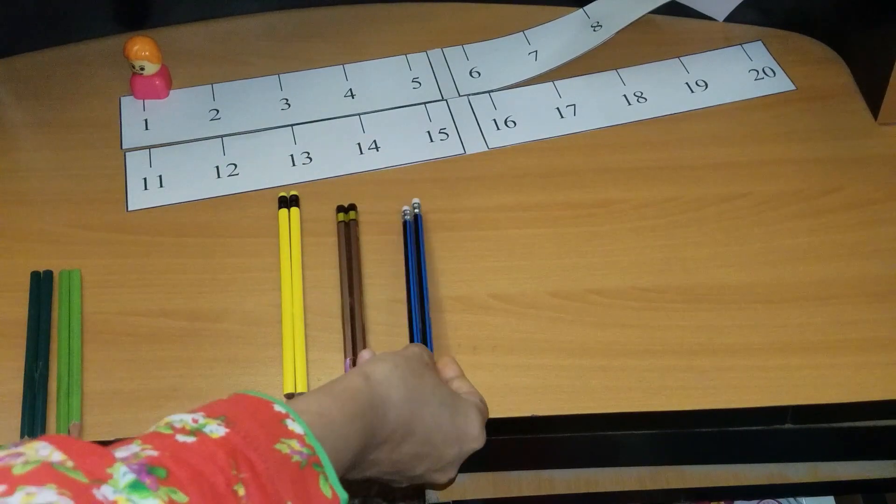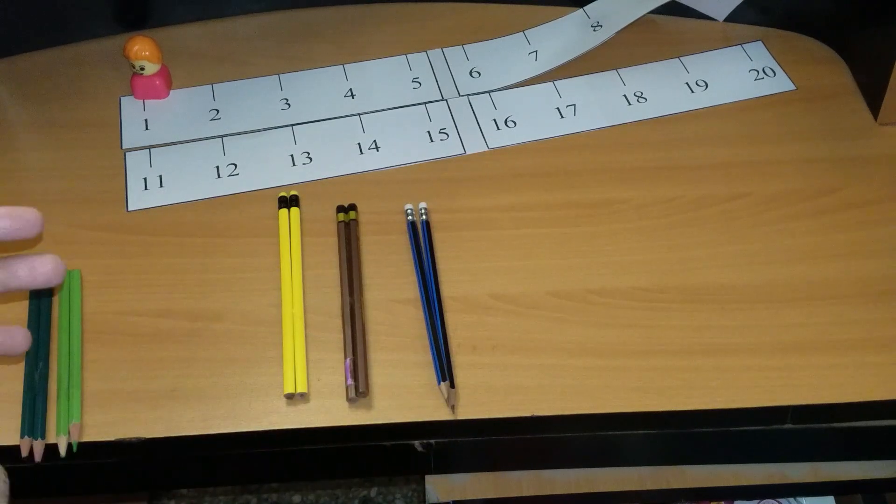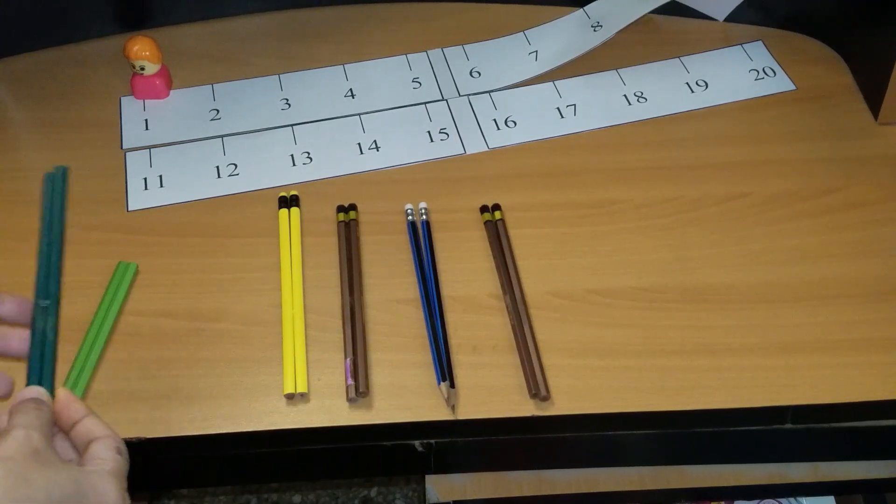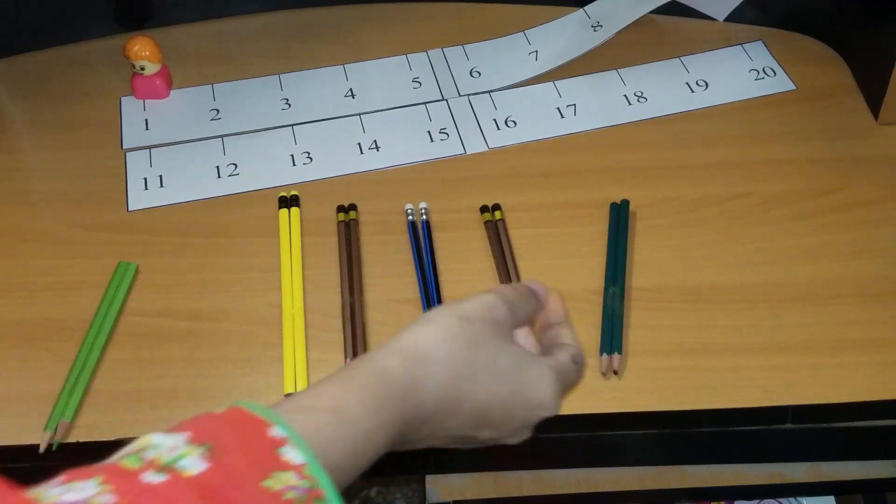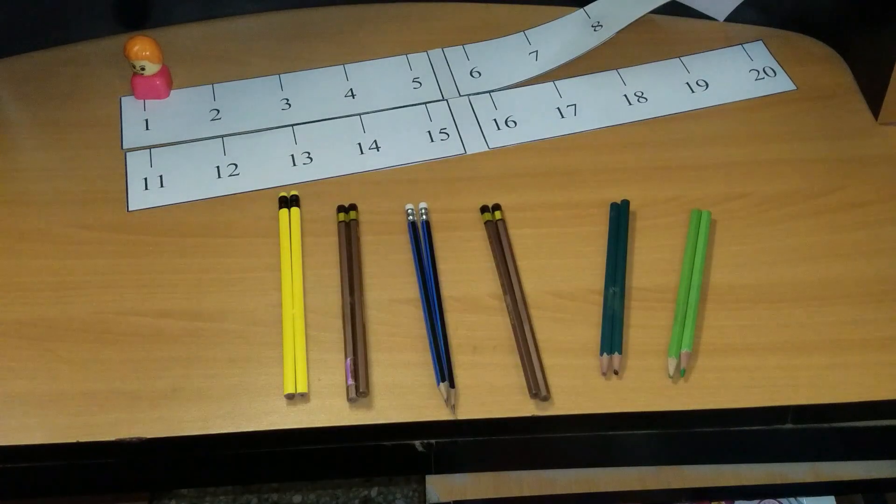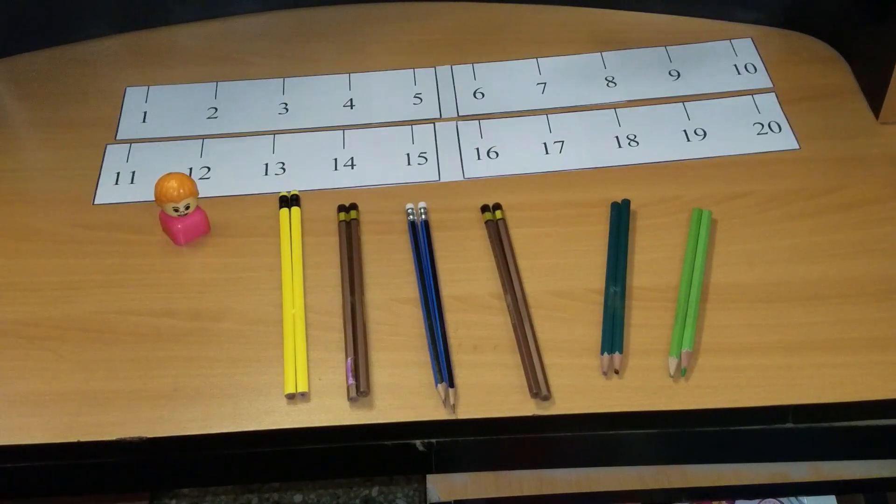As much skip counting numbers you are making your child learn, make a bundle of pencils in this way like this, and ask your child to count these like two, four, six, eight, ten, twelve. So you can keep counting and keep going on.